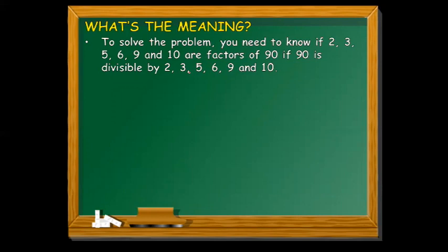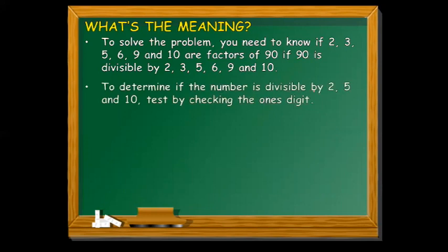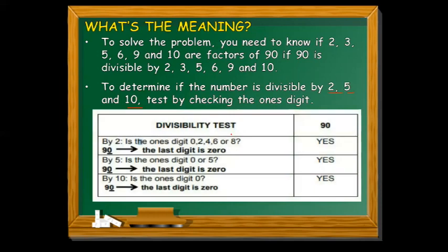To determine if a number is divisible by 2, 5, and 10, test by checking the 1's digit — that is the first number on the right side of the number. For divisibility by 2: is the 1's digit 0, 2, 4, 6, or 8? Our given number is 90, and its 1's digit is 0. Since 0 is in that list, it means 90 is divisible by 2.